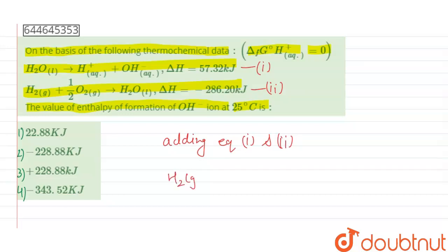H2 gas plus half O2 gas gives H plus aqueous plus OH minus aqueous, and the enthalpy of this reaction will be the addition of the enthalpy of both reactions, that is 57.32 plus minus 286.20, which gives minus 228.88 kilojoules.